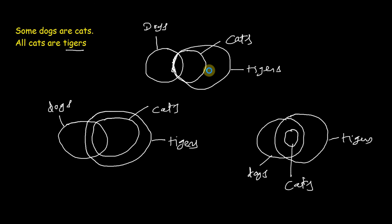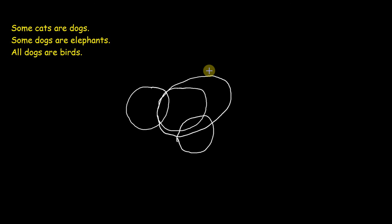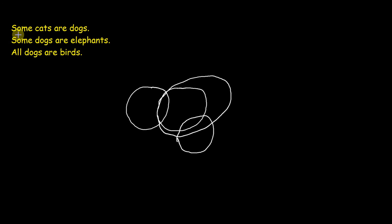Let's look at another example. The statements are: some cats are dogs, some dogs are elephants, and all dogs are birds. For statement one — some cats are dogs — we can draw the band diagram.